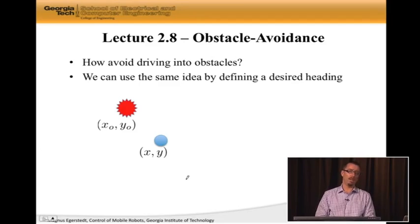The robot is the blue ball, and then we have this little red thingy, which is the obstacle, located at XO, YO. And the reason that we know the location of this is because of the disc abstraction that we talked about when we talked about sensors. If this was a goal, we would steer towards it. That much is clear.